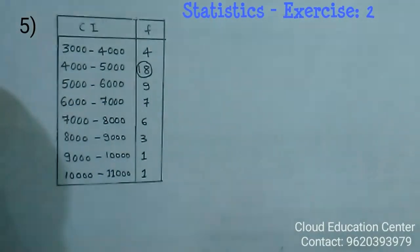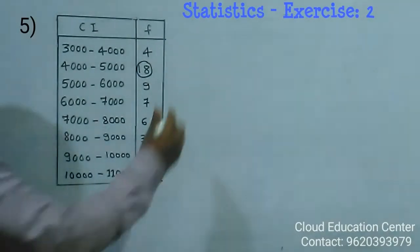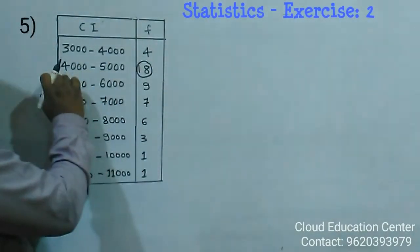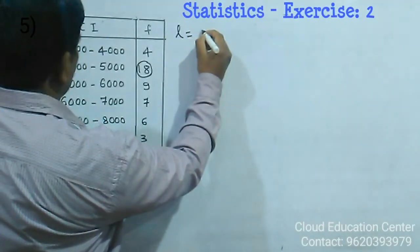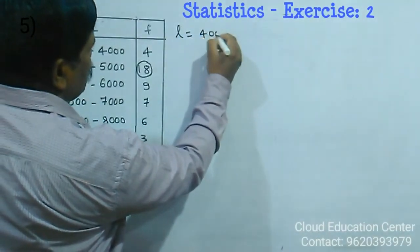Here, this is called a lower limit. That is, in modal class, the 4000 is the lower limit. That is, L is equal to 4000.